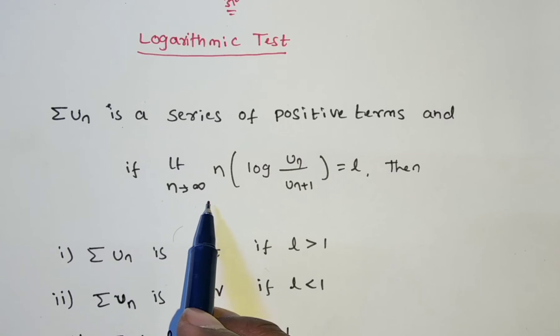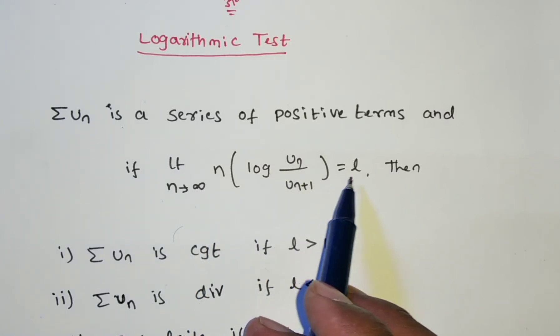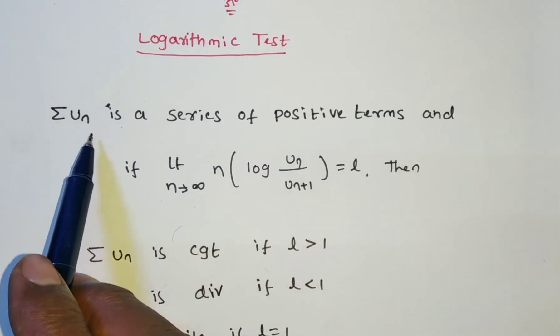Limits n tends to infinite n into log of u_n by u_(n+1) is equal to l. Then, based on l, we can decide which is convergent or divergent. The given series is convergent or divergent we will discuss.